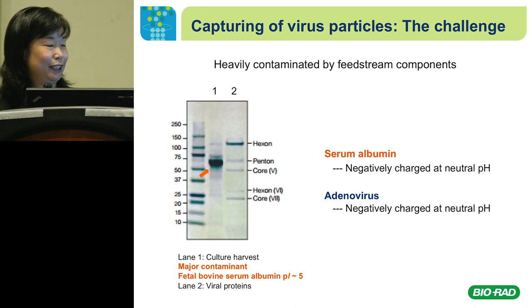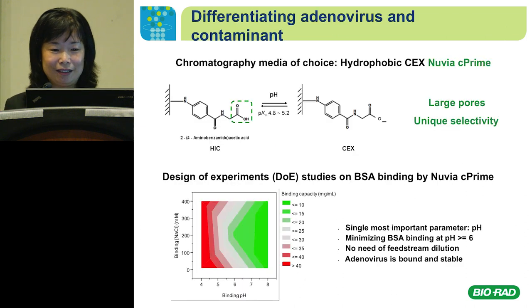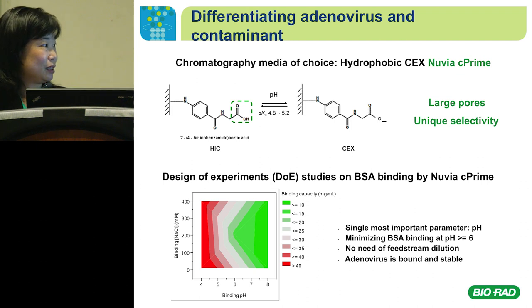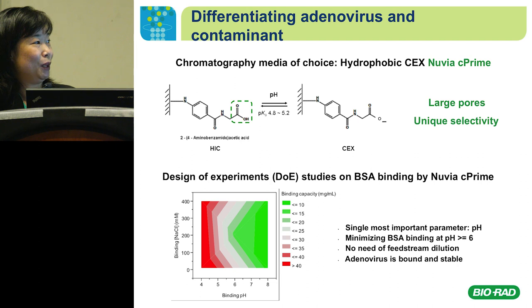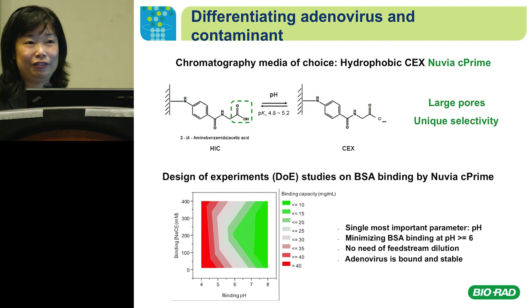With the majority of binding sites occupied by impurities, a small and fast capture step is not feasible. To address this, we turned our attention to a hydrophobic cation exchanger mixed-mode resin — Nuvia C Prime. Looking at the ligand structure, it has a hydrophobic moiety and a carboxylate whose charge state can be manipulated by buffer pH. At lower pH it behaves more like HIC — more hydrophobic; once we increase the buffer pH, we deal with the CEX mode of the resin. It has unique selectivity and also has large pores that allow binding of larger molecules, like other Nuvia resins.